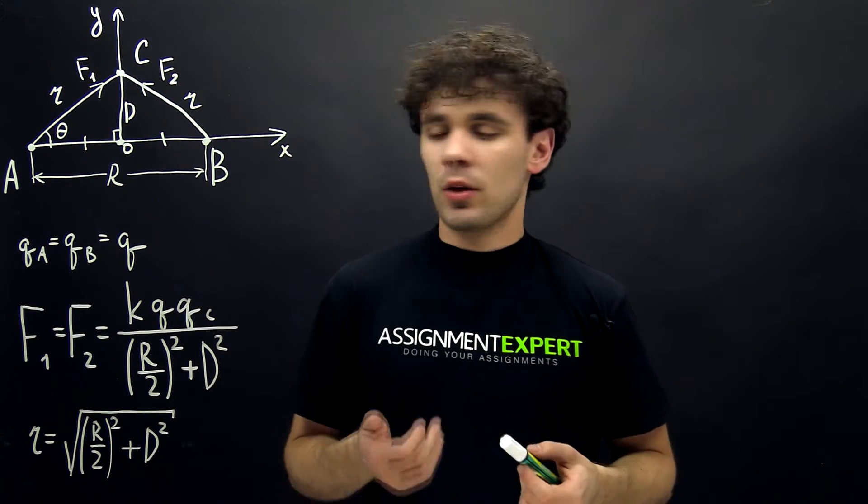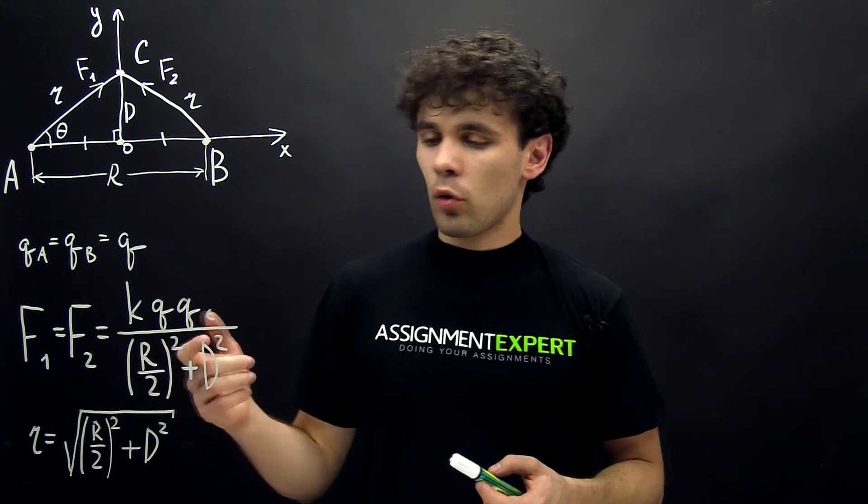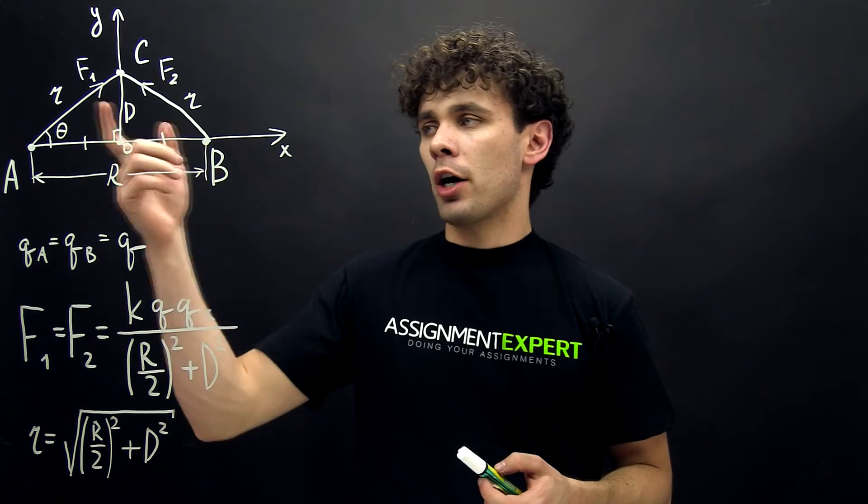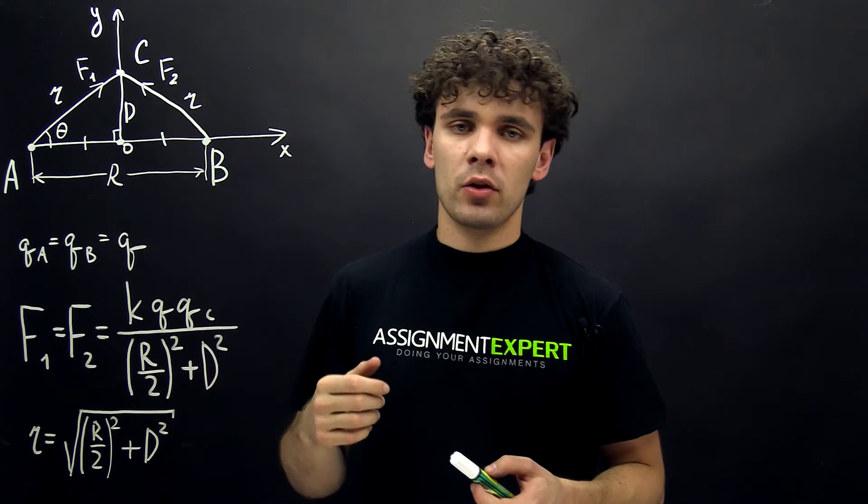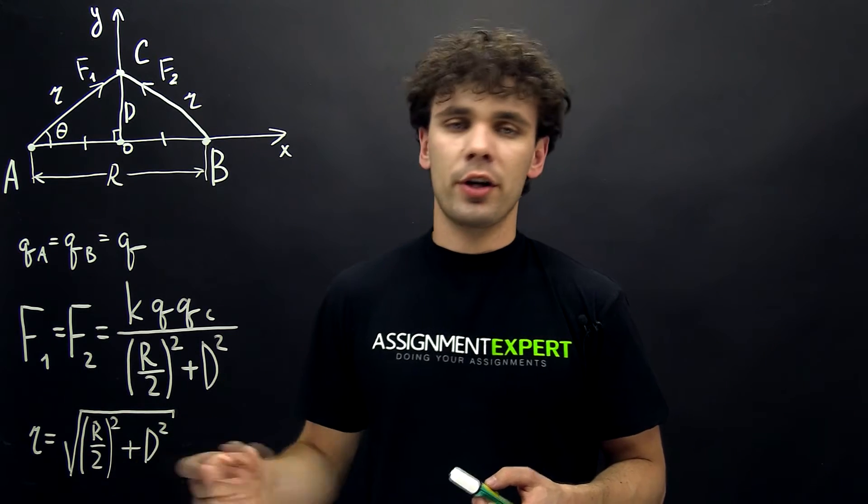All right guys, so here we found F1 and F2. And from this formula, we can also derive R, which is the side of these two triangles, and it is equal to the square root of the denominator.